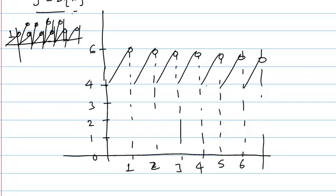The second graph is the greatest integer function y equals greatest integer of x, which goes like a staircase. We can see one point of intersection at x equals 4. The other point of intersection lies between 5 and 6, and after that there are no further points of intersection.